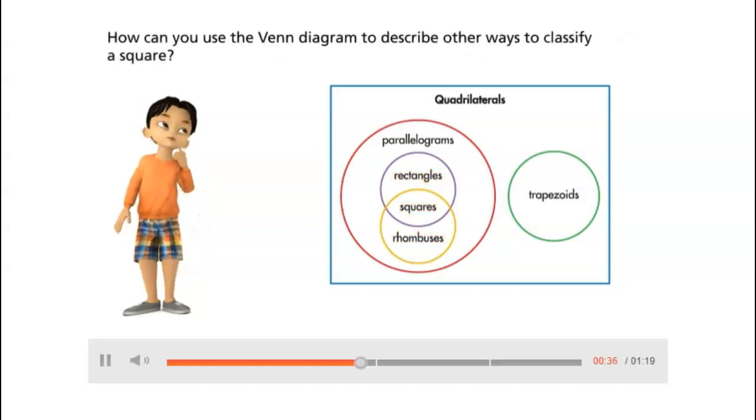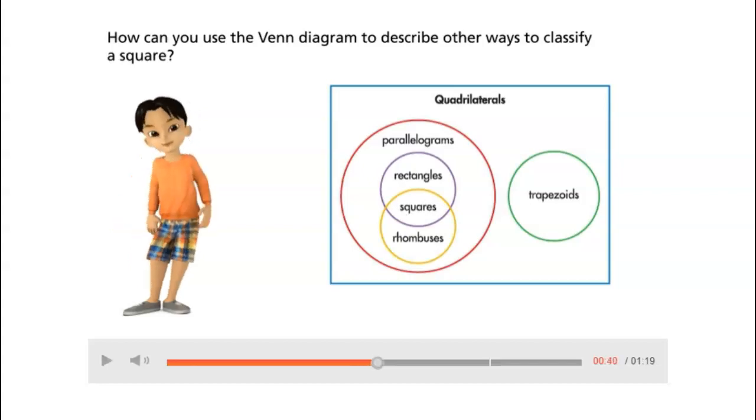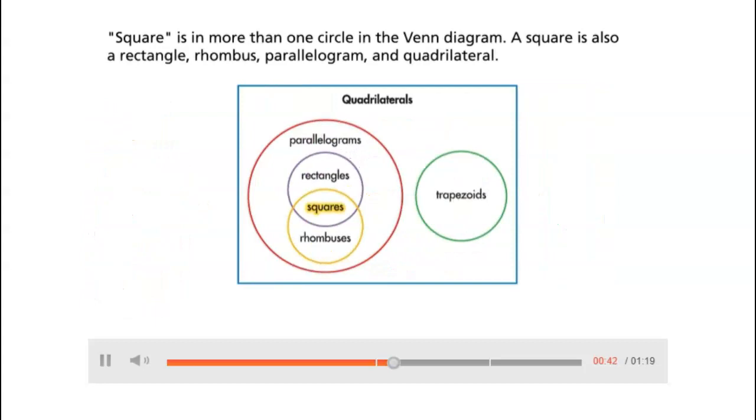How can you use the Venn diagram to describe other ways to classify a square? A square is in more than one circle in the Venn diagram. A square is also a rectangle, rhombus, parallelogram, and quadrilateral.